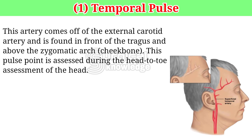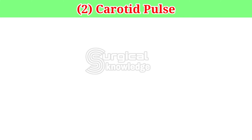Temporal pulse. This artery comes off of the external carotid artery and is found in front of the tragus and above the zygomatic arch. This pulse point is assessed during the head-to-toe assessment of the head.